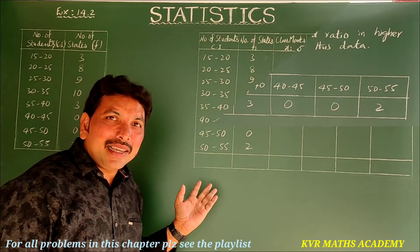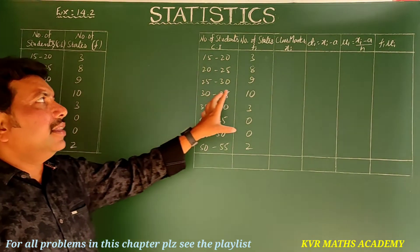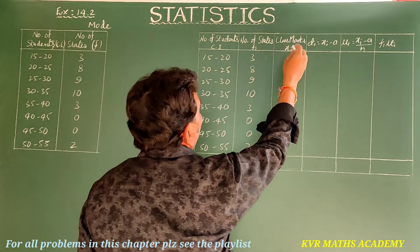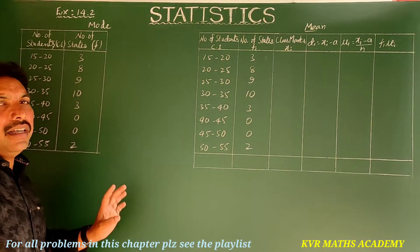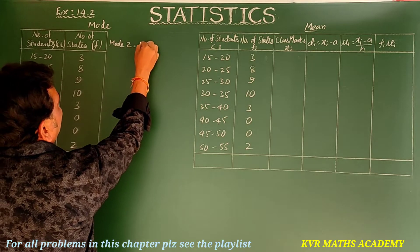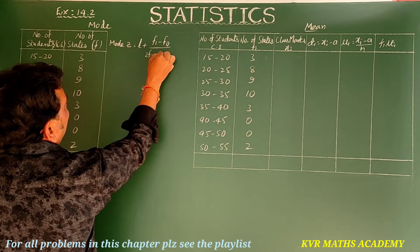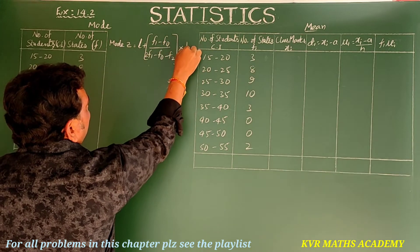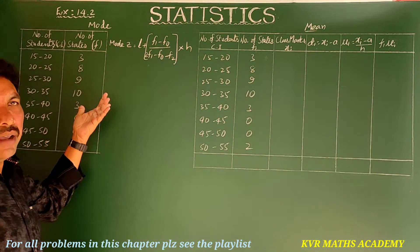I have drawn two tables — one for finding mode and another for finding mean. The formula for mode is: Z = l + (f1 − f0) / (2f1 − f0 − f2) × h. Let us identify f1, f0, l, h, and f2 from the table.